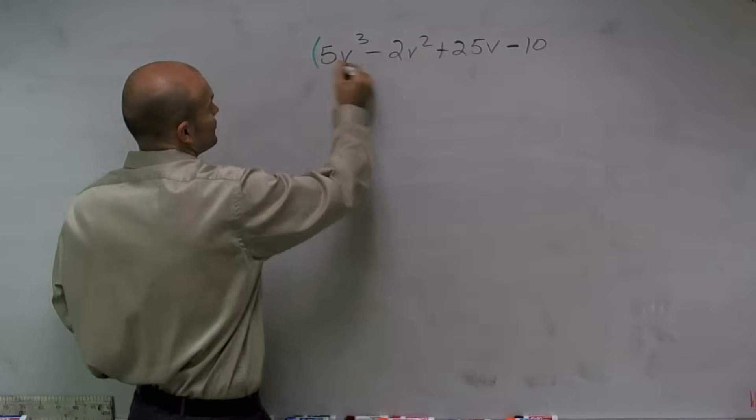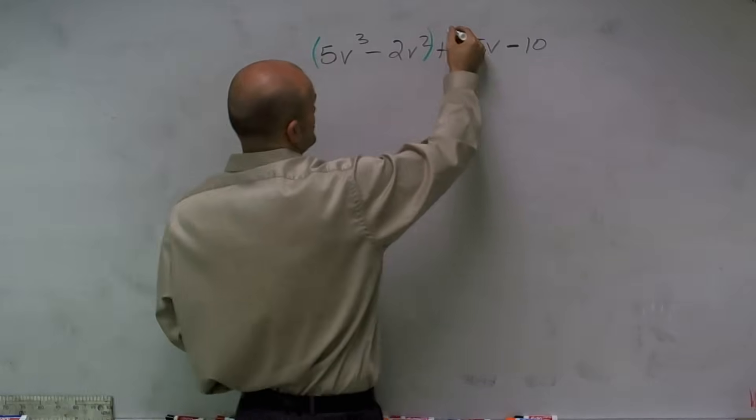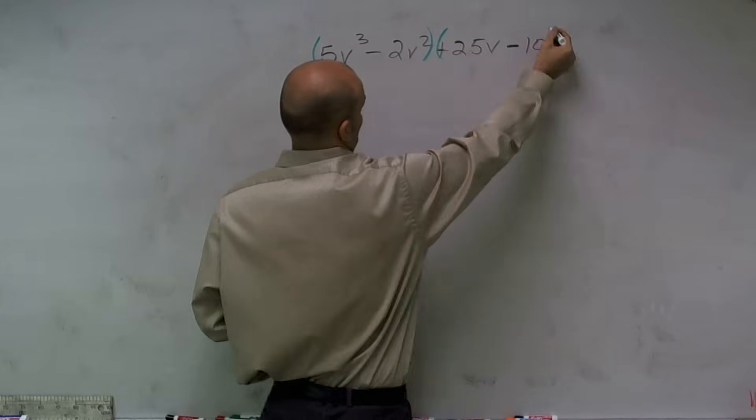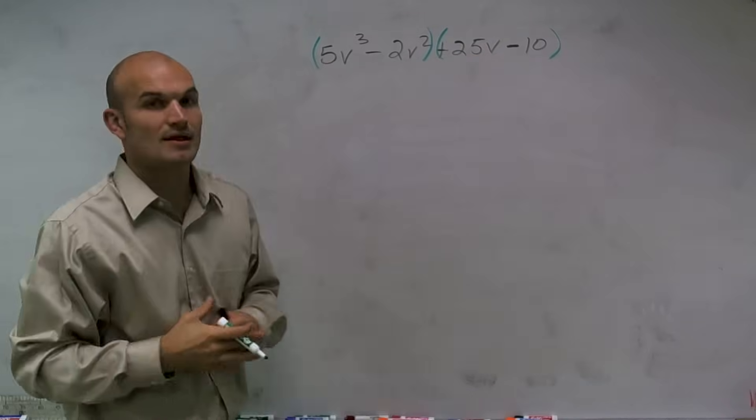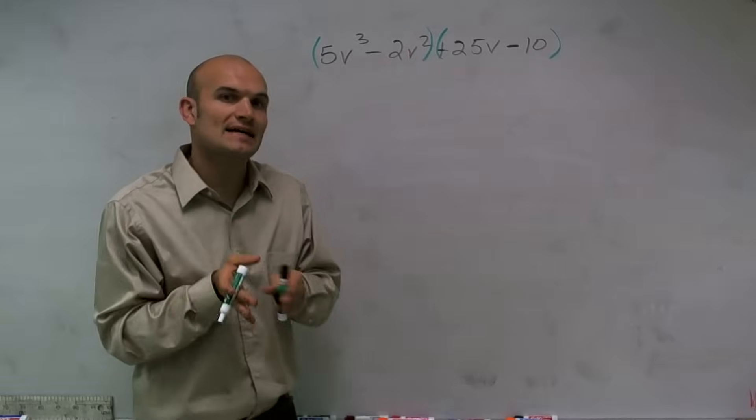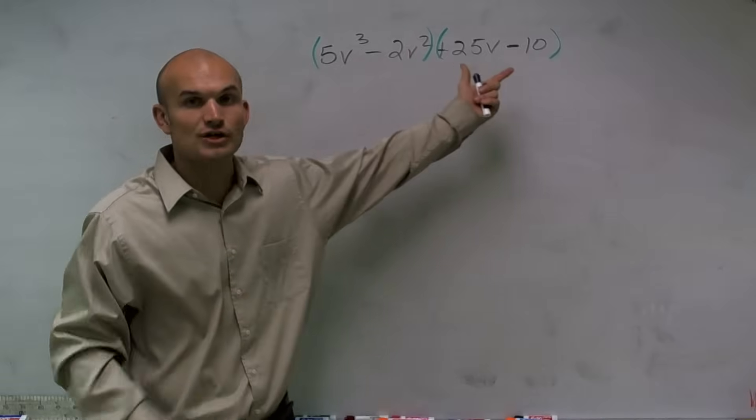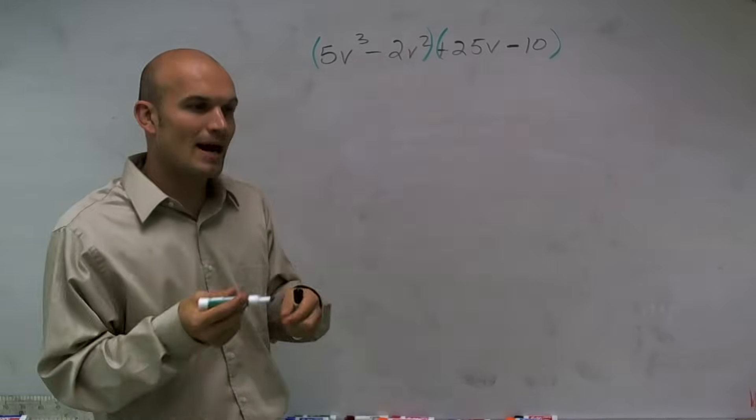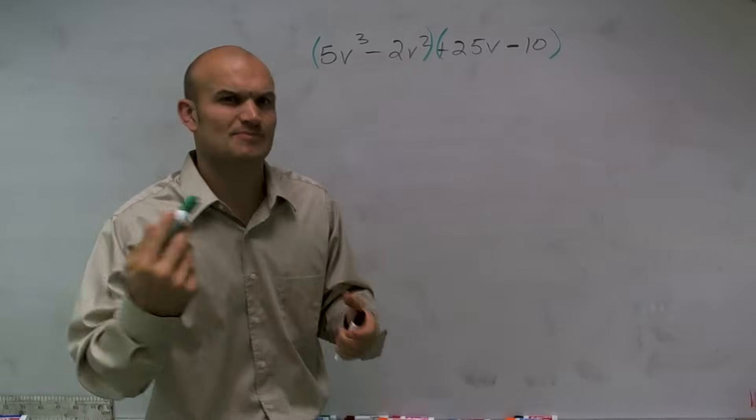So what I'm going to do is I'm going to group my first two terms and group the last two terms. Then what I'm going to do is I'm going to factor out the GCF of my first two terms and my last two terms and try to get the same term. And I'll explain that a little bit further.